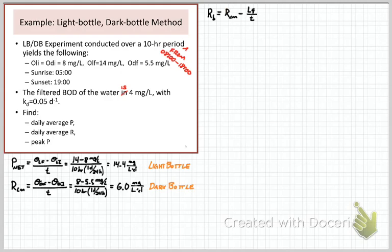The next thing that you might want to do is isolate what happened in the bottle due to the community that's living there respiring from the BOD, from the oxygen that was consumed just by decomposition. And so you can get the bottle respiration rate by subtracting either the filtered BOD per unit time, again, isolating respiration from BOD.